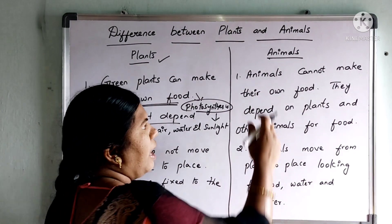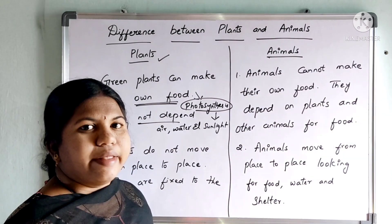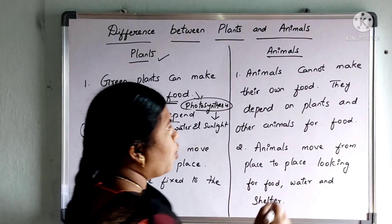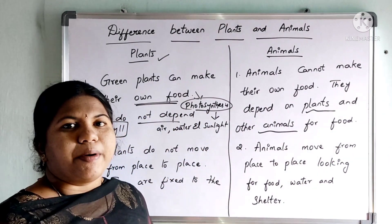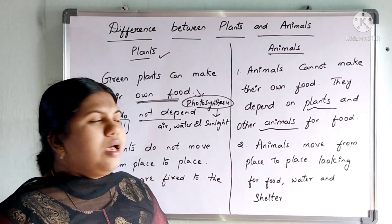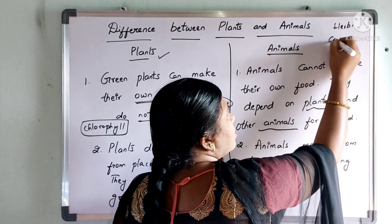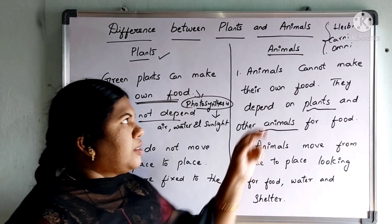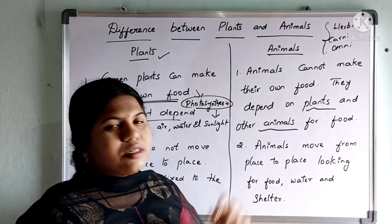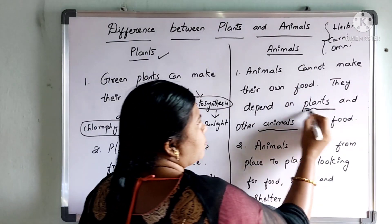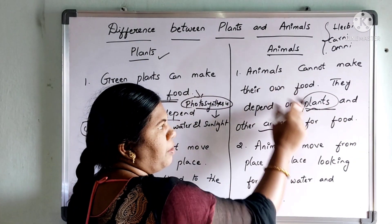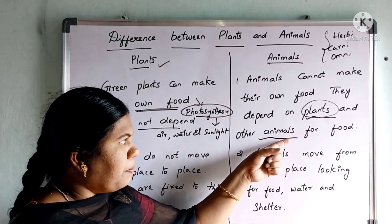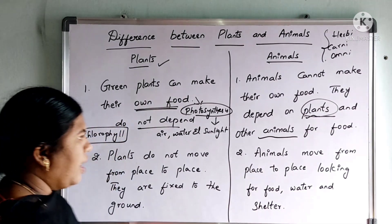Whereas, coming towards the animals — animals cannot make their own food. They cannot prepare their own food, so they depend on plants and other animals for their food. In my previous videos, I have made videos regarding herbivorous animals, carnivorous animals and omnivorous animals. Please have a look at those videos to understand what is meant by herbivorous, carnivorous and omnivorous animals. The animals which depend on plants are herbivorous animals, and those which depend on other animals are carnivorous animals. They cannot prepare their own food; they depend on either plants or animals.